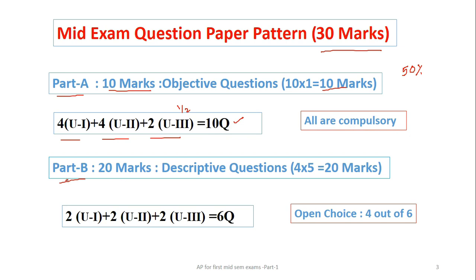We have to answer all the questions. When we come to part B, we have 20 marks. In this we have total 6 questions will be given and out of which we are supposed to answer 4 questions, each question carry 5 marks, so total 20 marks.